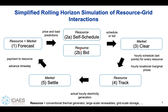Each cycle through this loop is nominally one hour. When I say resource, this includes both thermal generators, large-scale renewables, and grid-scale storage — it's a very general definition.